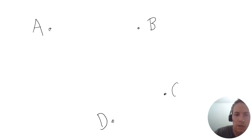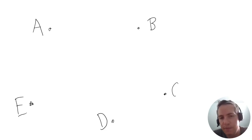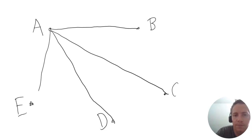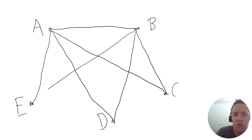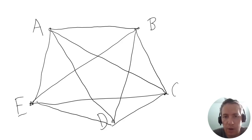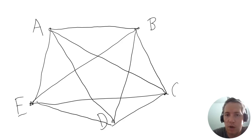A directed graph is where we make the edges have directions — we make arrows out of the edges. Suppose I have teams A, B, C, D, and E, represented as vertices. We're going to make this a round robin, so each team plays every other team. Each edge corresponds to a game that was played. To show which team won each game, we give the edge a direction toward the winning team.